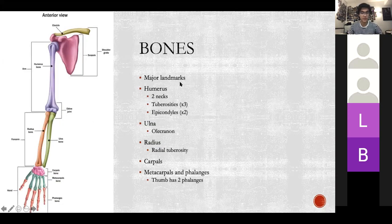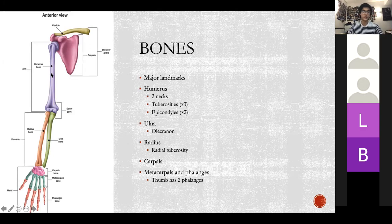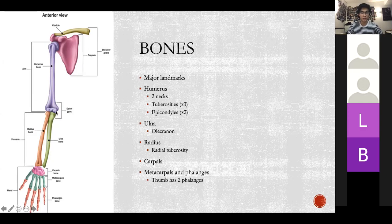So we've got the bones. For the shoulder, you've got your clavicle and your scapula. In the main part of the upper limb, we've got your humerus, ulna, radius, and then your carpals, metacarpals, and phalanges. The real points to take home are the two necks — your anatomical neck and your surgical neck on the humerus — your three tuberosities: deltoid, greater, and lesser tuberosity, and your medial and lateral epicondyles.